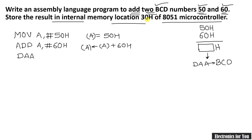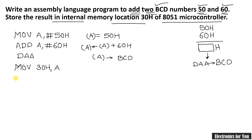Now we store the result in internal memory location 30h. Since the result is in the accumulator, DAA converts the accumulator content to BCD. Then we copy this BCD number from the accumulator to memory location 30h. At the end of the program we write a stop using AJMP or SJMP — for example, SJMP stop — to stop program execution.